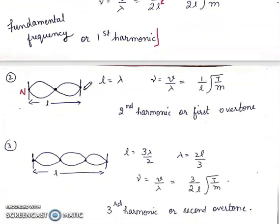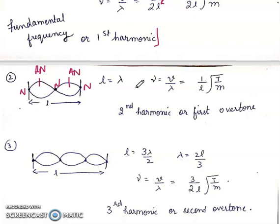Second case: three nodes and two antinodes. Here length L = λ (a complete wave). So ν = V/λ = (1/L)√(T/M). This is the second harmonic or first overtone.